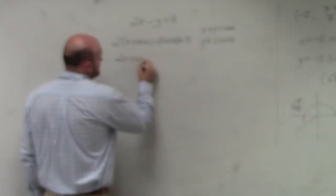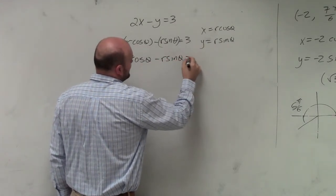So now we can write this. I can rewrite this as r times cosine of theta minus r times sine of theta equals 3.